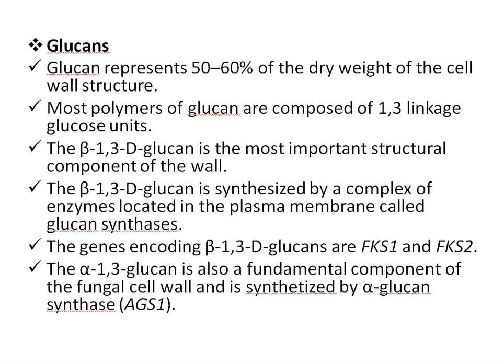Glucan is the most important structural polysaccharide of the fungal cell wall and represents 50–60% of the dry weight of this structure. Most polymers of the glucans are connected by 1,3-linkage glucose units, representing 65–90%. There are also glucans with beta-1,6 linkages in Candida but not in Aspergillus or other species, as well as beta-1,4, alpha-1,3, and alpha-1,4 links. Beta-1,3-d-glucan is the most important structural component of the wall to which other components are covalently linked.